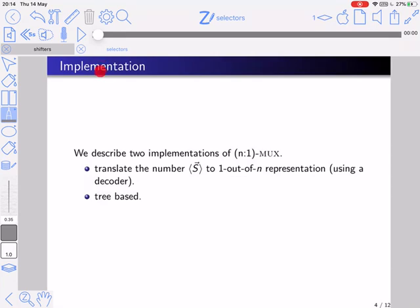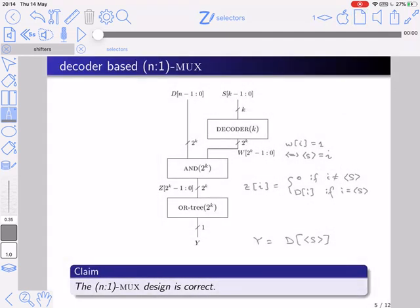We will now present an implementation of an N to 1 MUX. We will present, in fact, two implementations. One is based on a decoder, and the second one is tree-based. Let's look at the decoder-based N to 1 MUX. This is the circuit. Here is the data input, here is the select input. We take the select input which consists of K bits and feed it to a decoder with K bits of input.